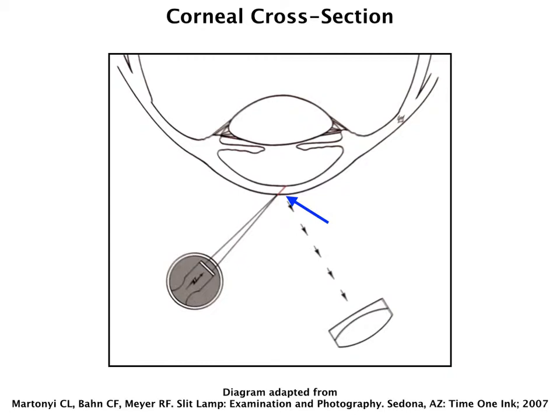The other direct illumination technique is the corneal cross-section. A lot of people find this useful, though it's also a very difficult technique to use. This is useful in highlighting and photographing the corneal tissues and seeing any changes within those tissues.